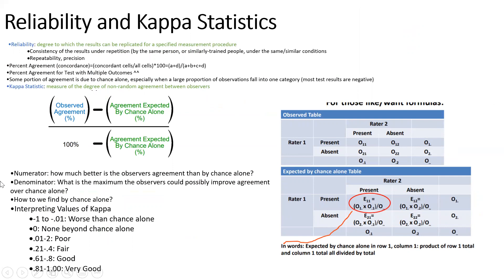Reliability is the degree to which test results can be replicated. This is especially relevant when a human must interpret the test. To ensure two different observers get similar results, you calculate the kappa statistic, which measures the degree of non-random agreement between observers.